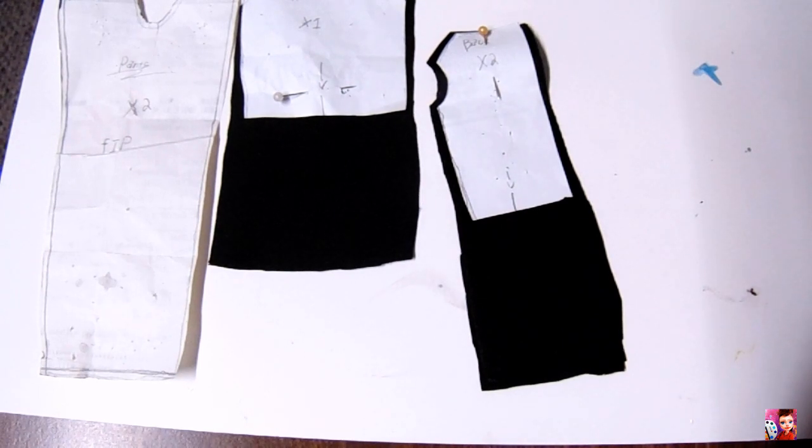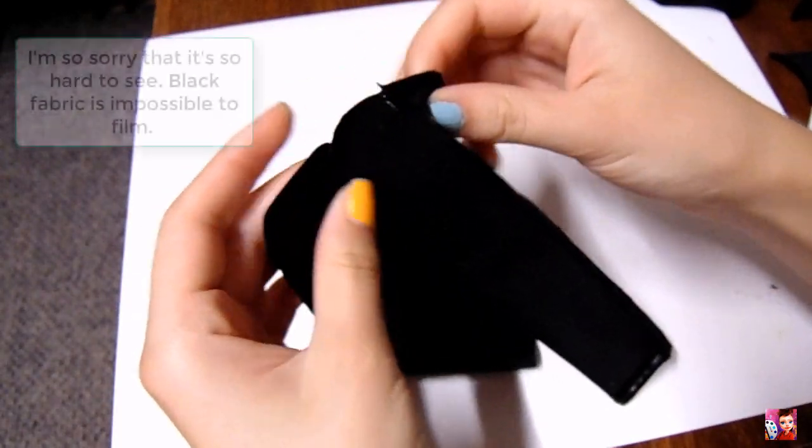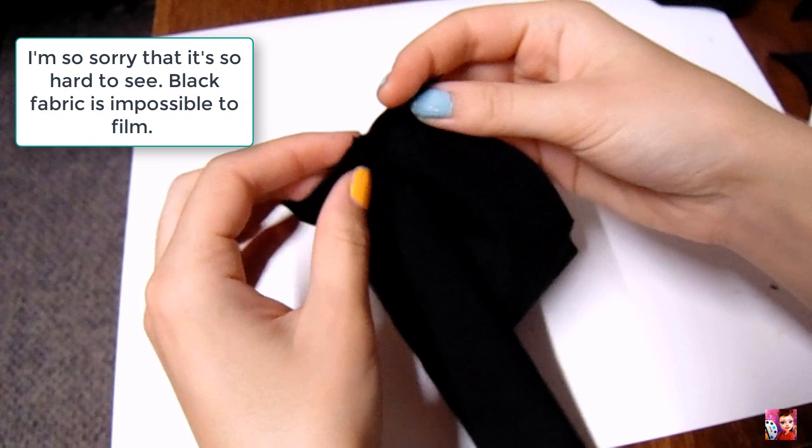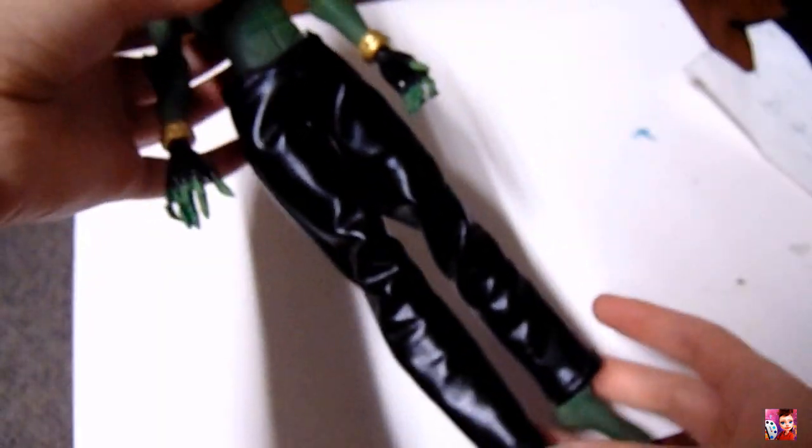From here, I sew together his pants. I attach the crotch first, and then I hem the waistband and the edge of the pant legs. Then I sew down the side seams.